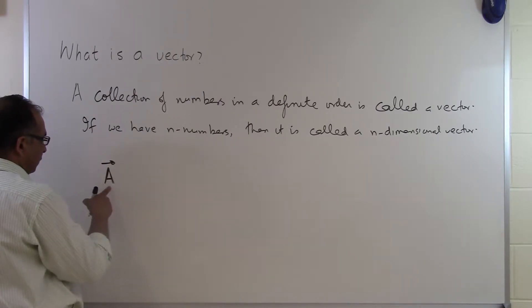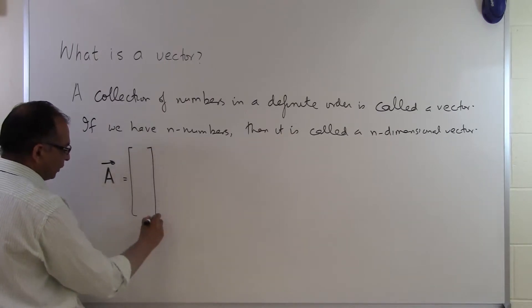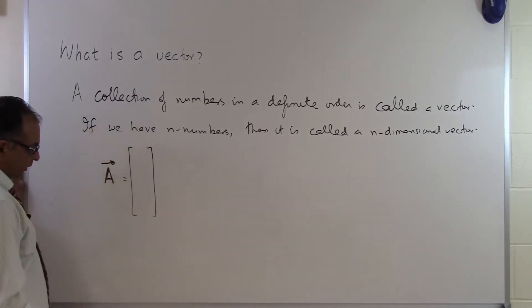Some books will put the vector as a bold letter, but since you cannot make a difference between bold and unbold case when you are writing things on the board or doing your homework by hand, we are going to use arrows throughout this chapter.